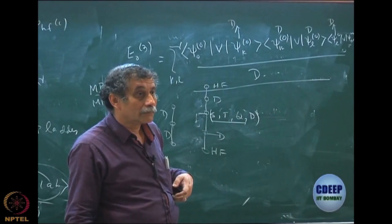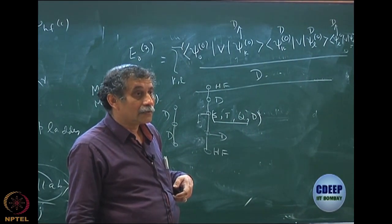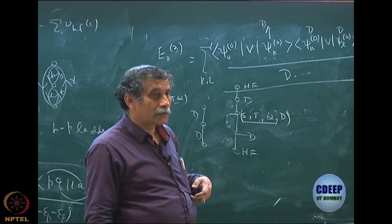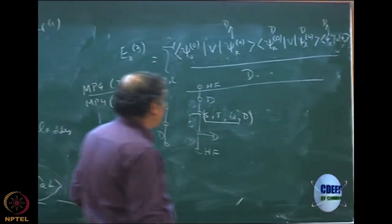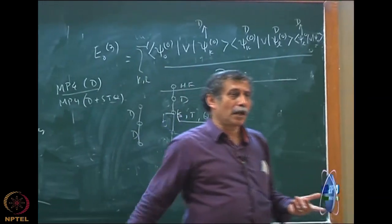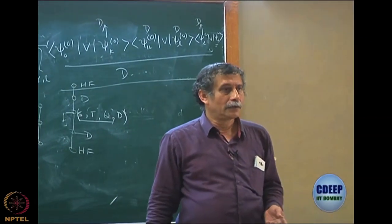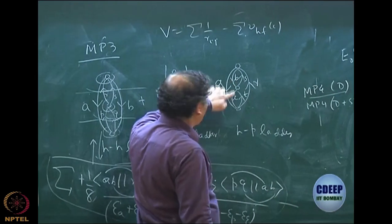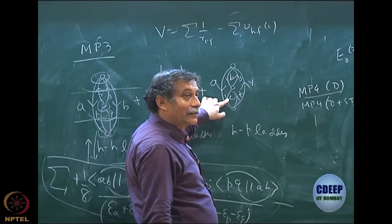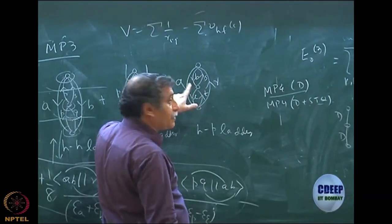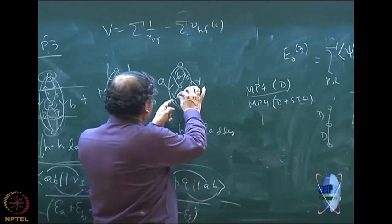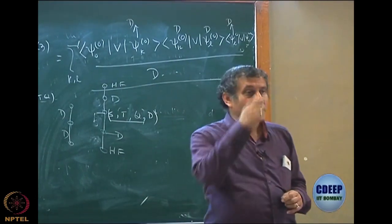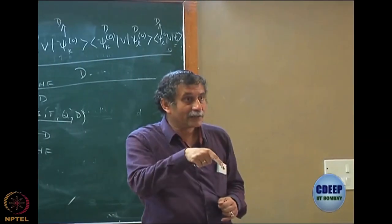There are MP4 calculations that show results for MP4 doubles only, then MP4 doubles plus singles, triples, quadruples — and the difference is important to note. I know doubles are most important. If you compute the correlation energy contribution with only doubles — the ladder diagrams — the contribution from singles, triples, quadruples is very small; the difference will be very small. Doubles is the most important contribution.